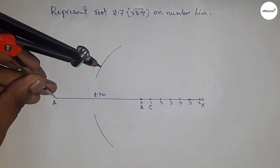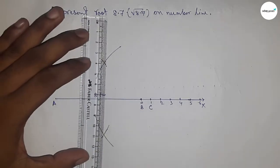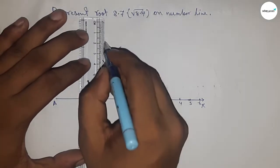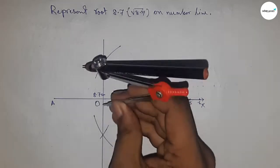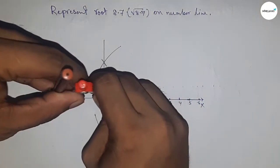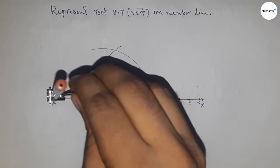With the same length, put the compass here and cut the arcs. Join these to meet at point O. Now take the distance OA and OC to draw a semicircle.